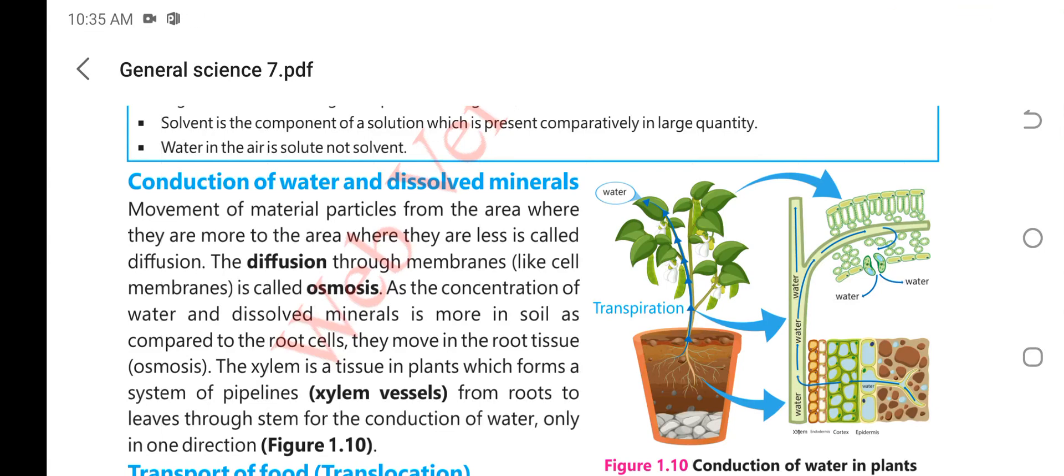Today we will discuss the conduction of water in plants. Look at this diagram. This diagram shows conduction of water in plants. As we know, diffusion is the movement of material from area of high concentration to the area of low concentration. If this diffusion takes place through a membrane, this is called osmosis.